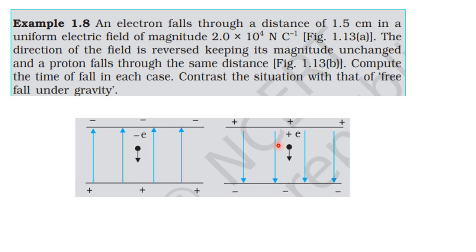The force on the proton acts in the direction of the electric field, so the proton also has a downward acceleration. The magnitude of the electric field is 2×10⁴ Newton per Coulomb, and the distance through which the charges fall is 1.5 centimeters. We need to find the time taken in the case of the electron and the time taken in the case of the proton.